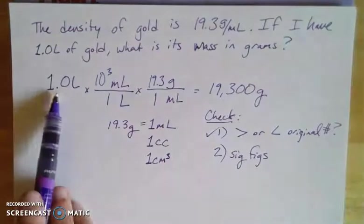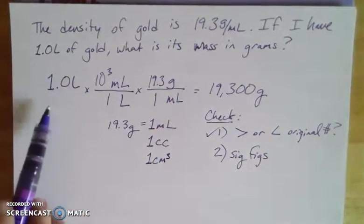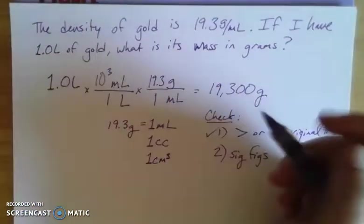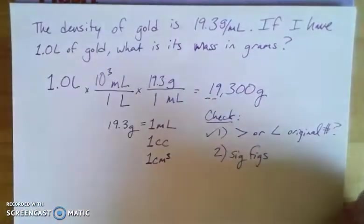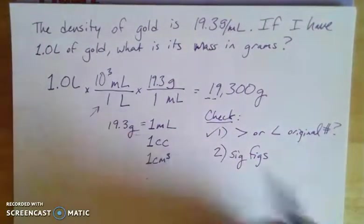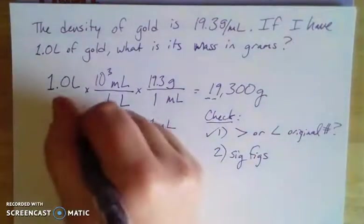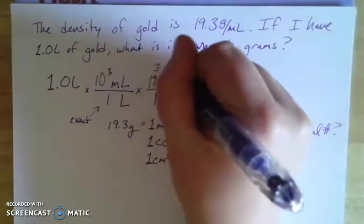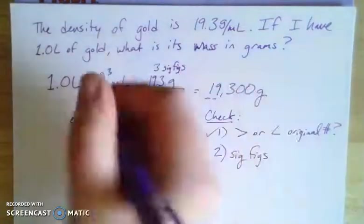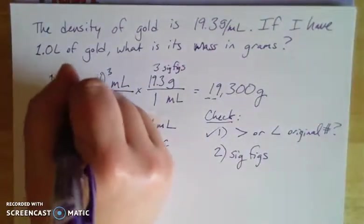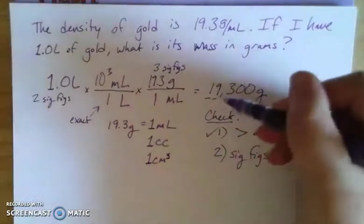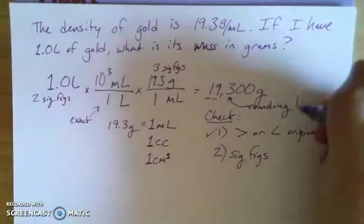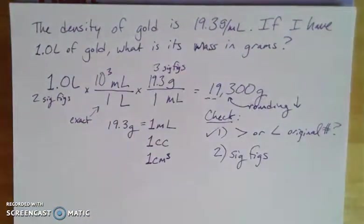for my density and two sig figs for my volume, which means I have to have two sig figs in my answer. These two are significant. This guy I don't have to factor in because it's exact - it's a definition. This guy had three sig figs and this has two, so we're going with our lowest one. We're looking to this one to round, and in this case it's less than five so we're going to round down. That gets us 19,000 grams, or if we want to do it